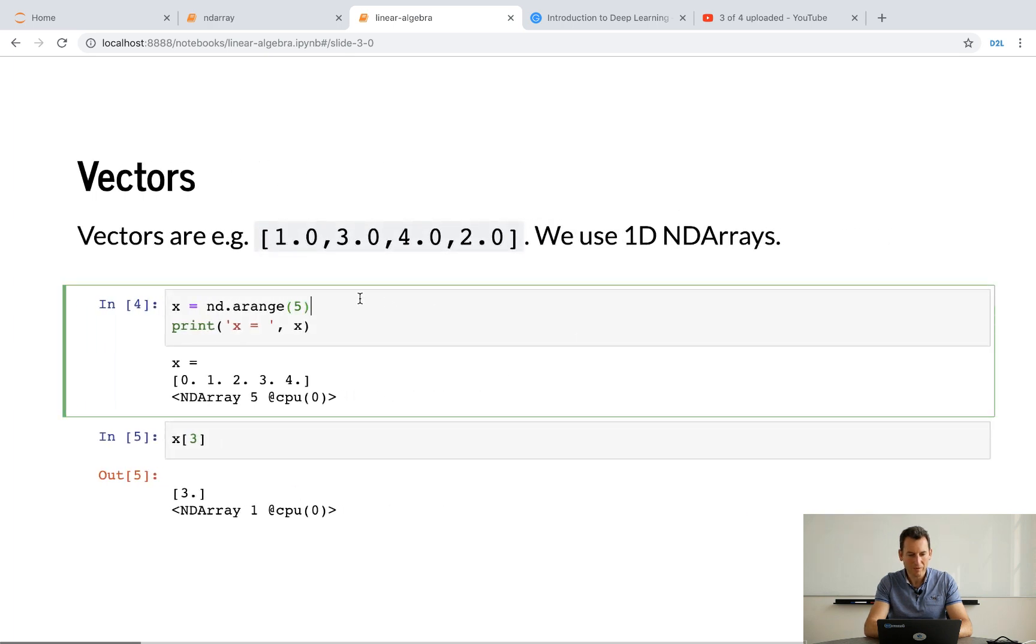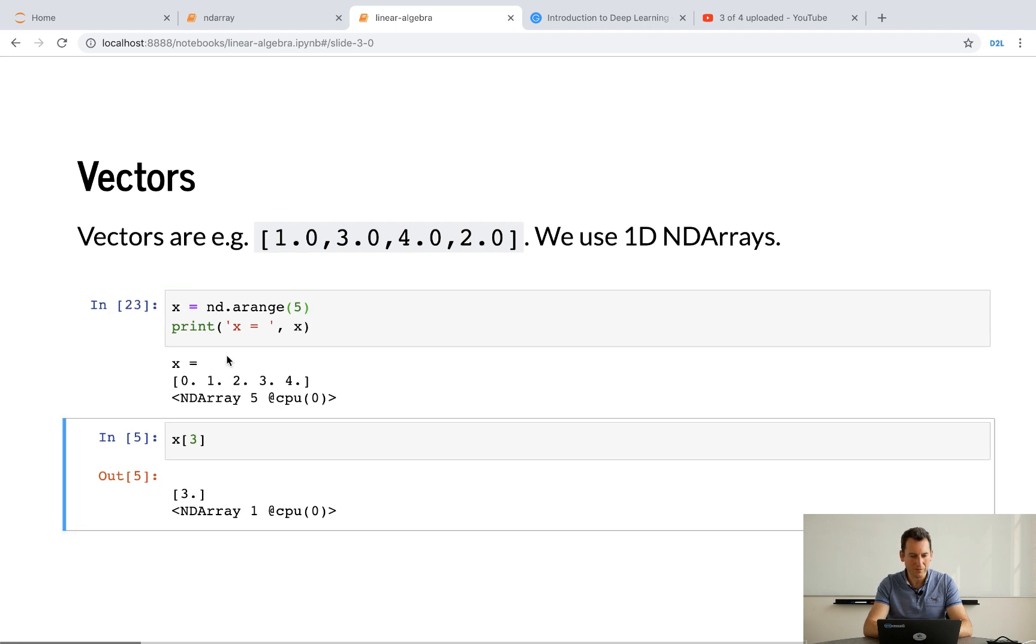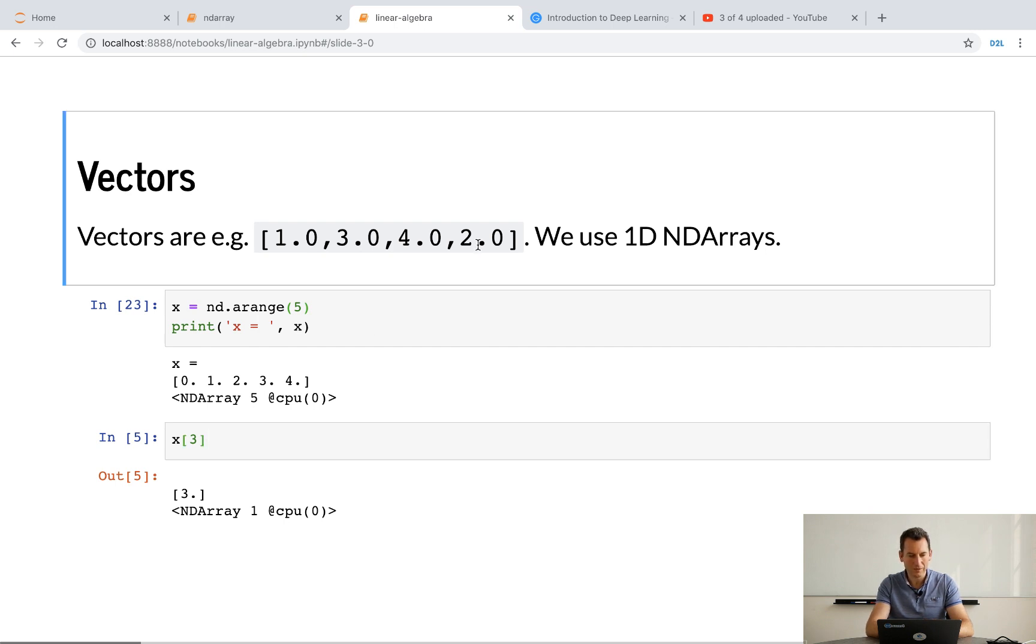Now, vectors are, as you would expect, just sequences in this case of scalars. So, for instance, if we want to generate a vector that goes from zero to four, well, we use a range. And I could have different step sizes. All of those can be easily adjusted. But in this case here, it's x equals nd dot arange. And that's it. I can index individual entries like x of three. And it does exactly what you would expect.